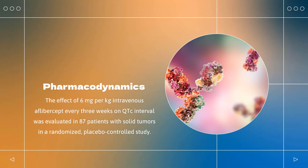Pharmacodynamics. The effect of 6 mg per kg intravenous Aflibercept every 3 weeks on QTc interval was evaluated in 87 patients with solid tumors in a randomized, placebo-controlled study. No large changes in the mean QTc interval from baseline, i.e., greater than 20 ms as corrected for placebo, based on the Fridericia correction method, were detected. However, a small increase in the mean QTc interval, i.e., less than 10 ms, cannot be excluded due to the limitations of the study design.